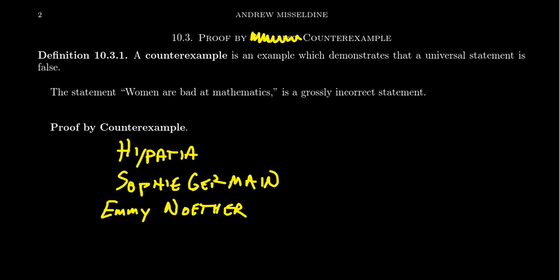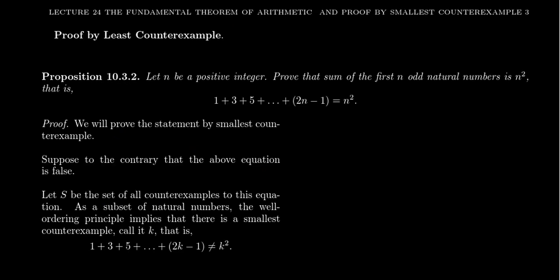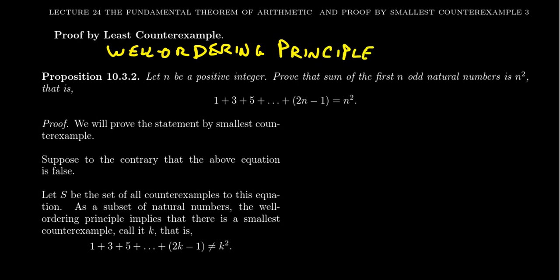I mentioned this as an example of proof by counterexample — I know the statement is false because I can provide counterexamples. In this case I can provide tons, but of course it only takes one to disprove a universal statement. With that in mind, let's pivot to the notion of proof by least counterexample. This technique basically utilizes the well-ordering principle, which is related to the idea of mathematical induction. In this video we'll solidify the connection between the well-ordering principle and the principle of mathematical induction. The well-ordering principle tells us that any non-empty subset of natural numbers contains a minimum element.